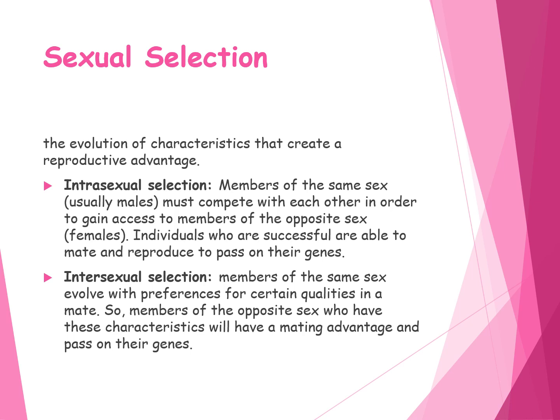Intersexual selection is where members of the same sex involve preferences for certain qualities in a mate of the opposite sex. As females invest more time in offspring, the idea is that she will be more choosy. So intersexual selection means that typically females are the choosier of the two sexes. These characteristics will be passed on to future generations because they have allowed individuals to mate, reproduce, and pass on those genes.